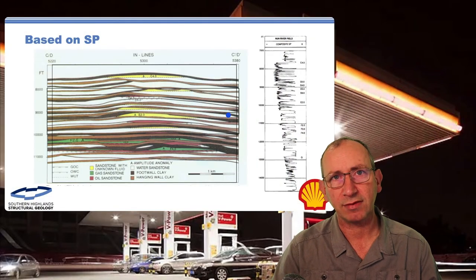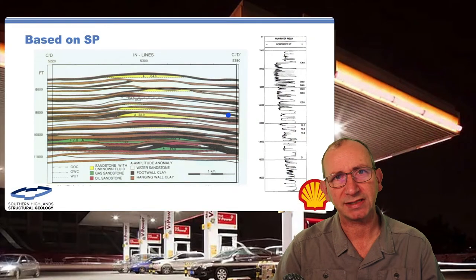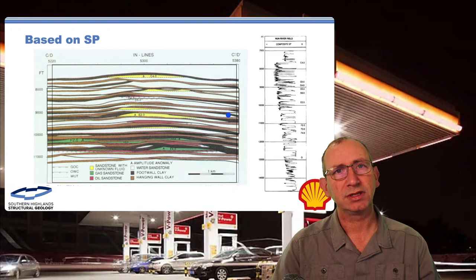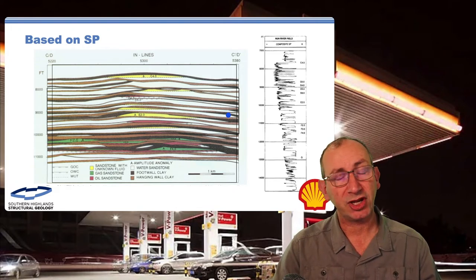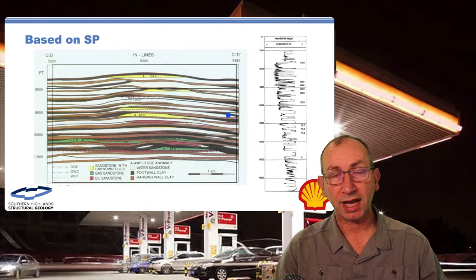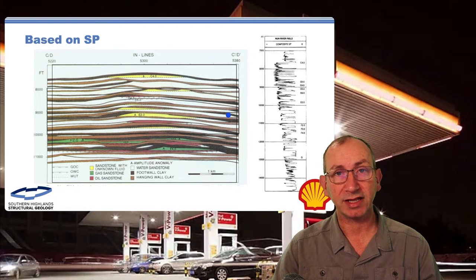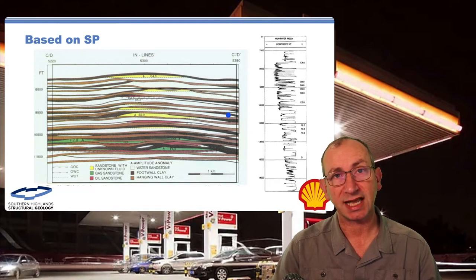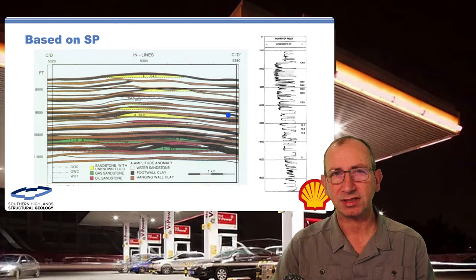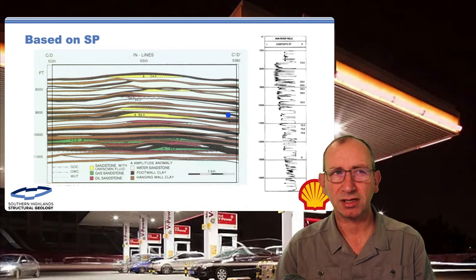The first thing I found when I went to replicate the work is that it was based on SP logs. Spontaneous potential logs measure sand — they don't measure shale. We've moved on a lot and gamma ray logs are what we should be using because they tell us where the shales are. The SP log will over-represent the sand thickness, so if we're thinking about membrane seal and new methodologies we should be using the right log.